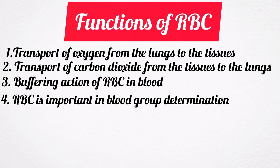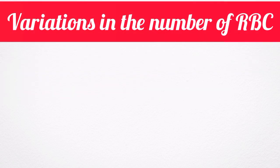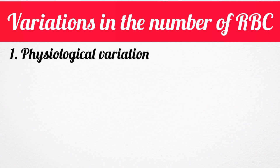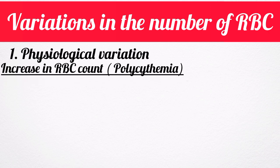Now let's talk about the variations in the number of red blood cells. Under physiological variation, we have an increase in red blood cell counts. Increase in the red blood cell count is known as polycythemia. Polycythemia occurs in both physiological and pathological conditions. When it occurs in physiological conditions, it is called physiological polycythemia. The increase in number of red blood cells during this condition is marginal and temporary.